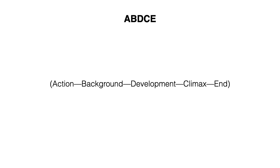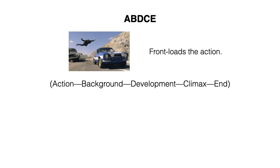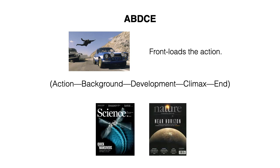ABDCE starts with dramatic action to immediately engage the readers. It then describes characters and settings so that readers can understand the story. Development follows the action as the story develops to the climax. The climax brings all the threads of the story together and addresses them. And then the ending is the same as the resolution. This structure front-loads the action, and it's good for generalist journals like Science and Nature.